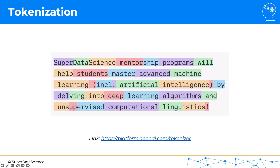There are so many words in the English language — too many for the large language model to work with each one separately, which would make it less efficient. On the other hand, there are too few letters — only 26 plus some special characters. So tokens are a balance in the middle, where not all words are kept as individual tokens, but not all words are broken up either.